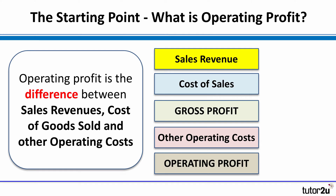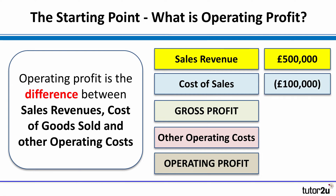So let's look at an example. Let's imagine we had sales revenue of half a million pounds — 500,000 pounds. If our cost of sales were 100,000 pounds, then the gross profit is the difference between those two: 500 take away 100. The gross profit is 400,000 pounds.